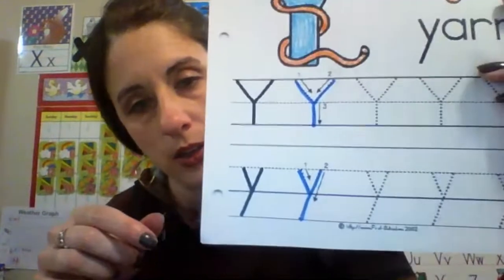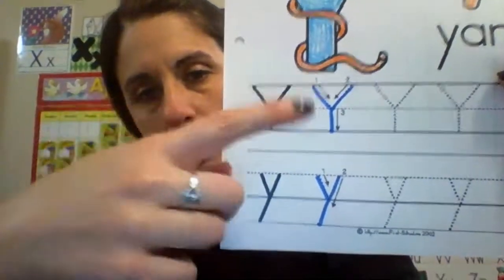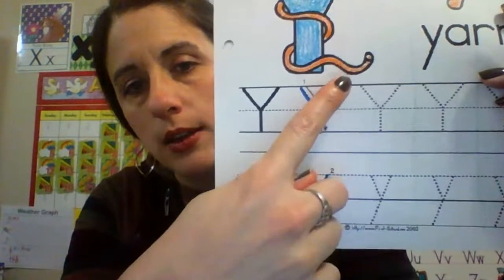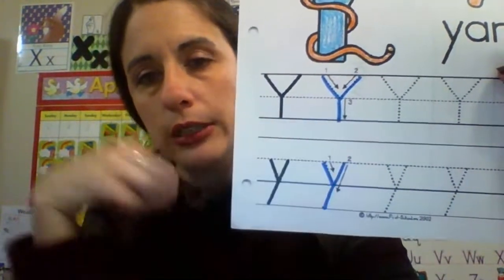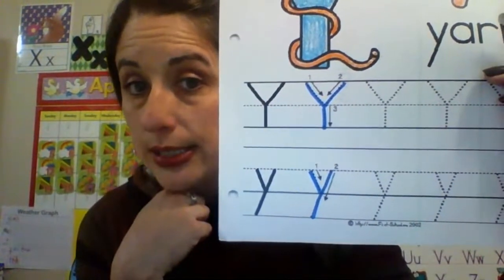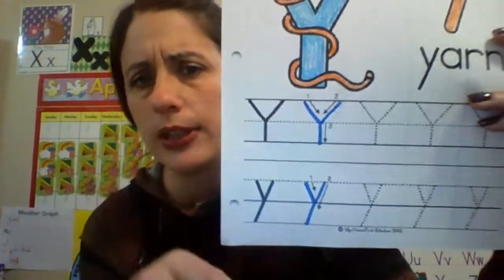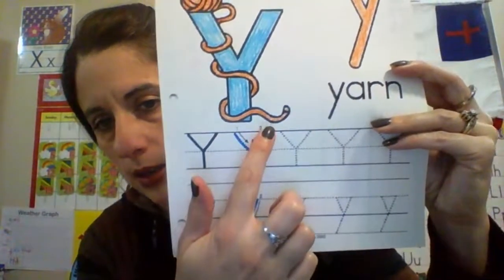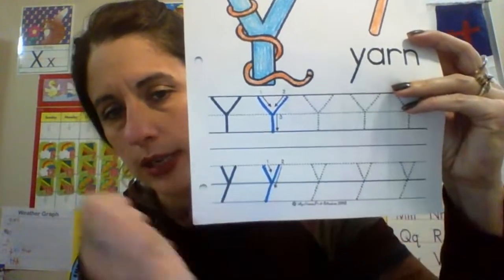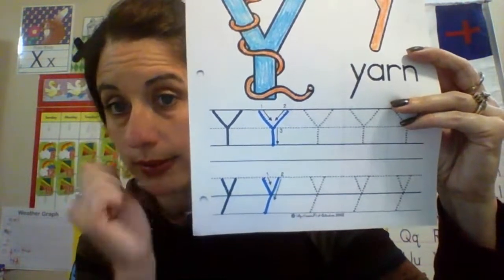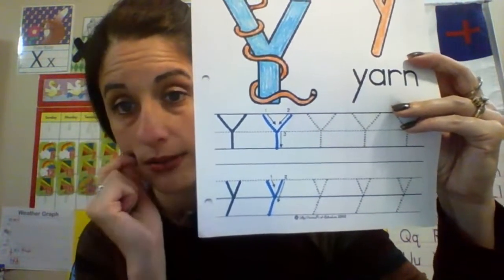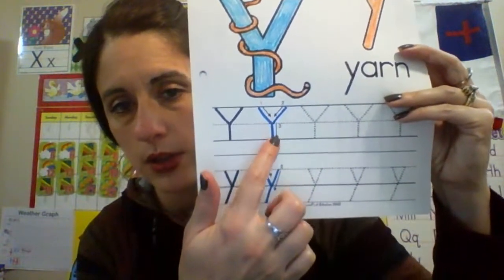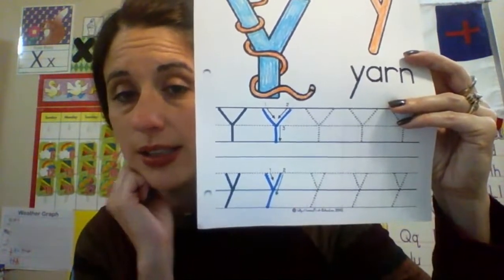I'm going to get closer here because the letter Y uppercase goes one, two, three. Do you see how it does that? A little bit tricky. Let's watch again — one, two, three. Let's try one more time — one, two, three. I think you can do that!